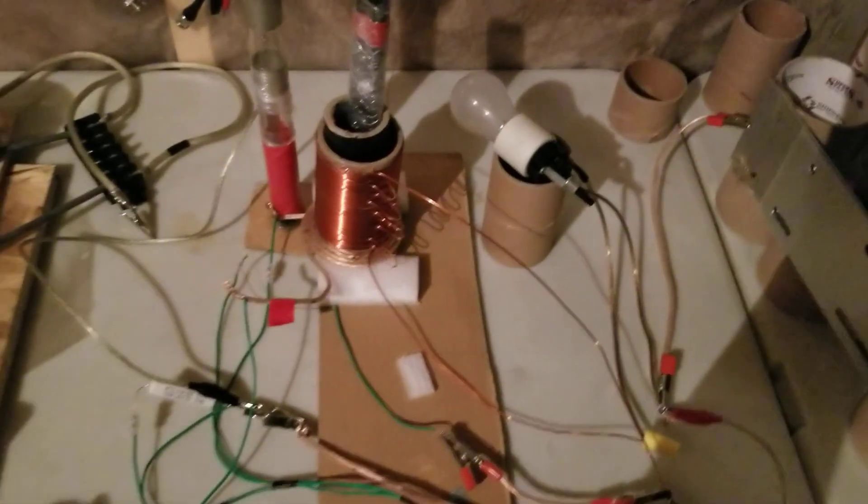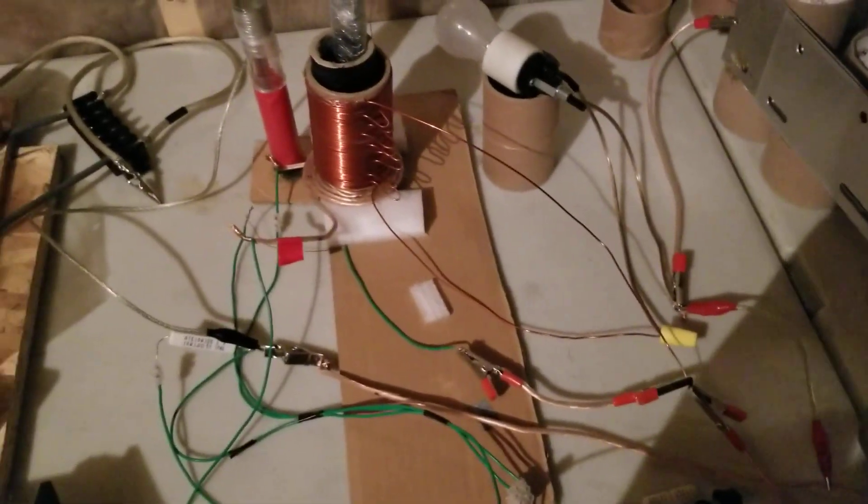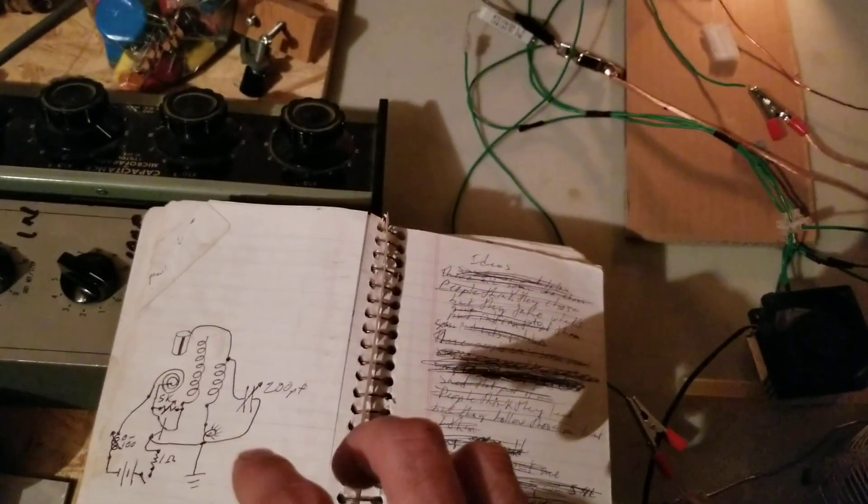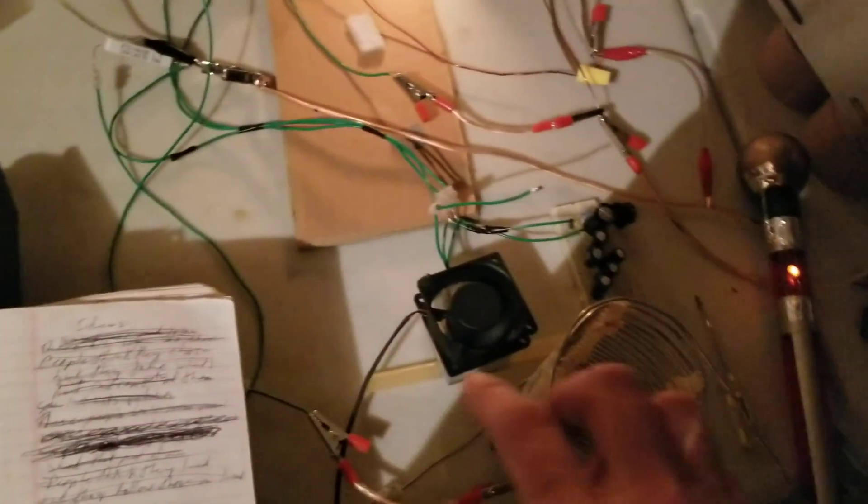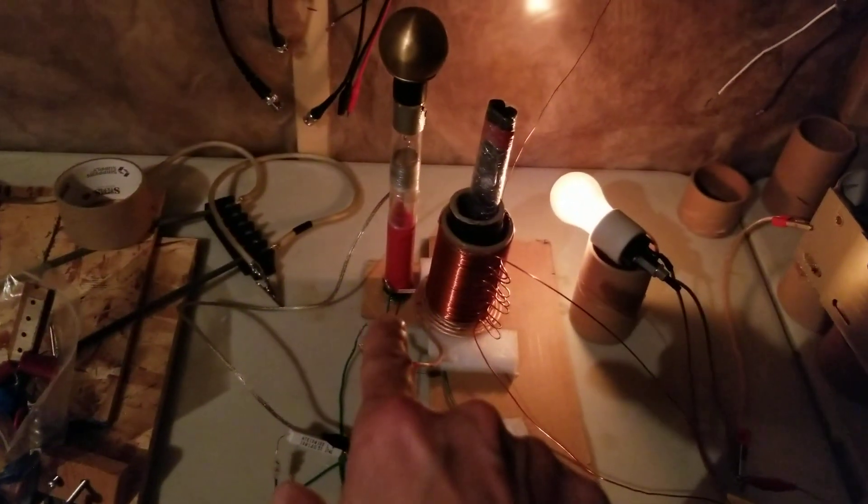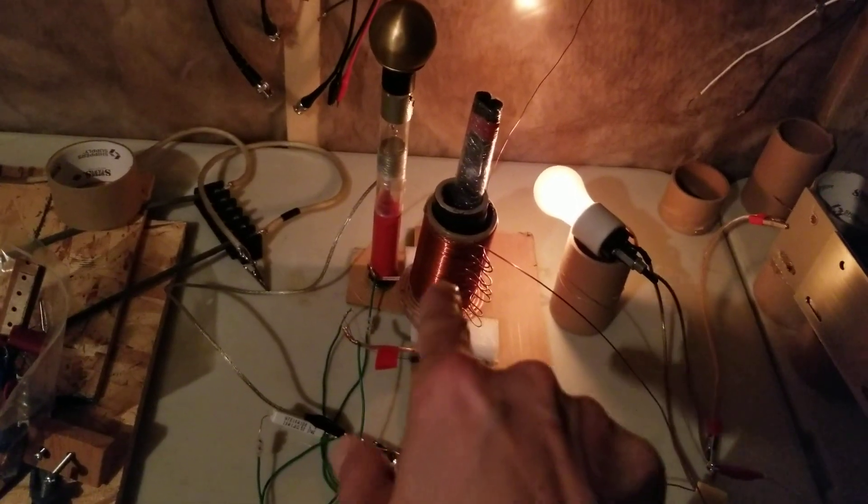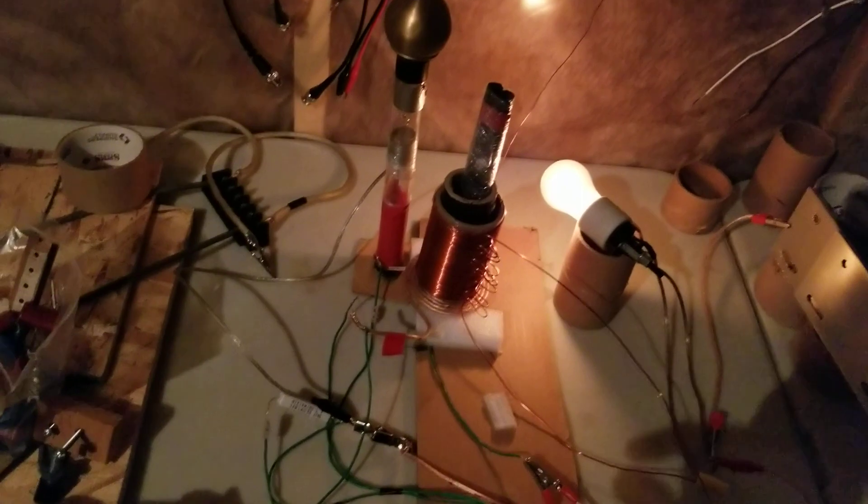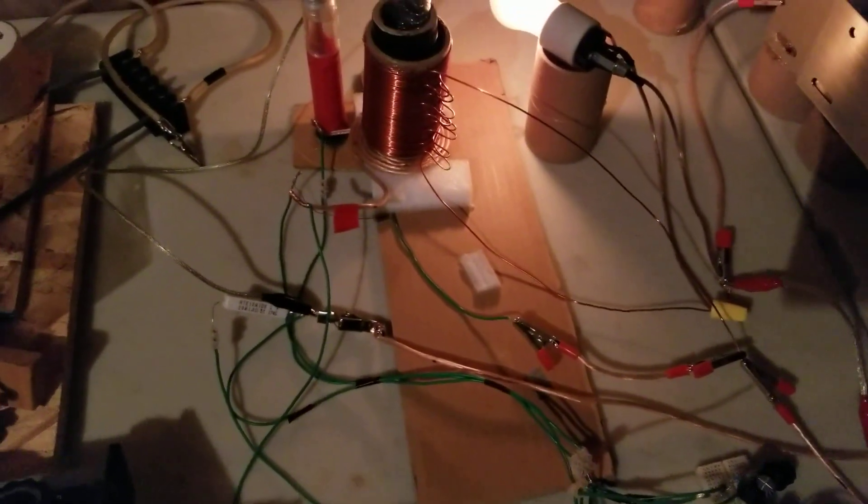Over here is the setup. Switcher on. We've got a 24 volt supply, and then we're going through this choke to the primary coil, and then from the inner of the primary coil, we're then going to the transistor, which in this case is an NTE 36.